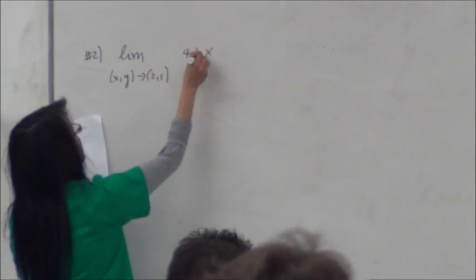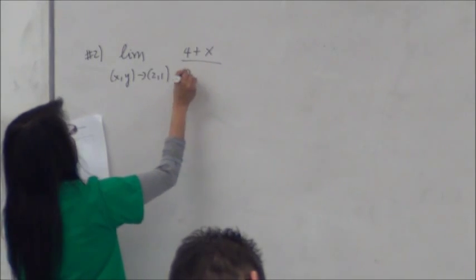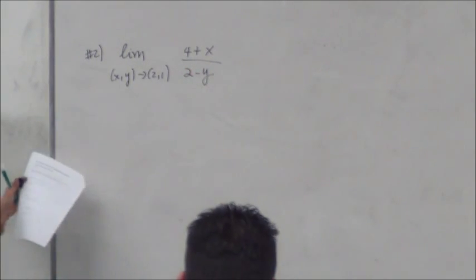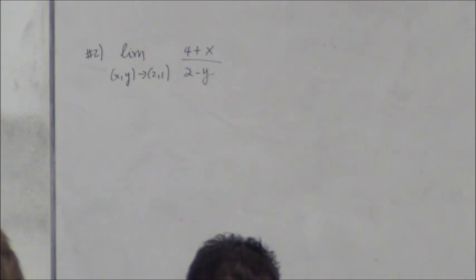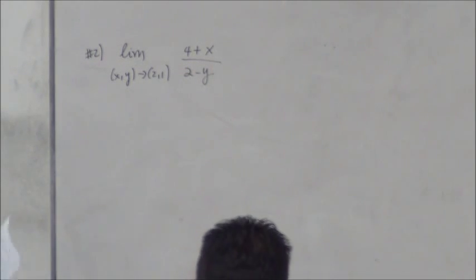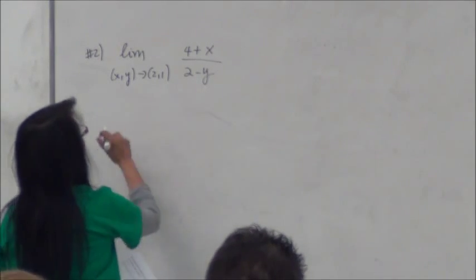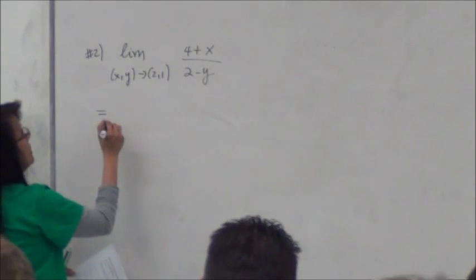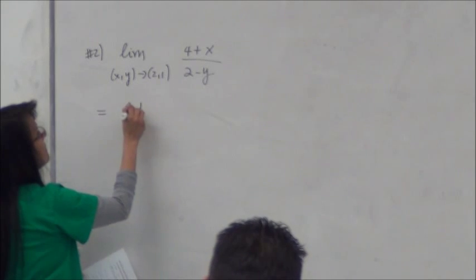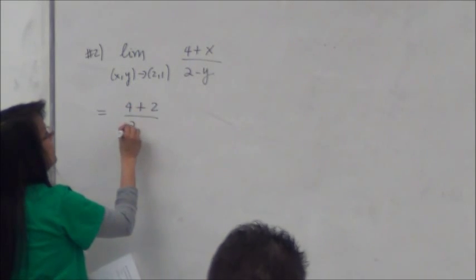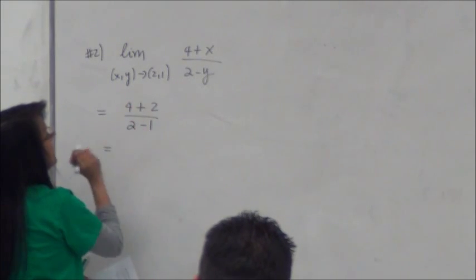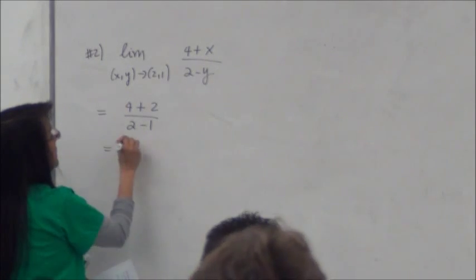What do you think is the limit of 4+x over 2 minus y as x, y approaches 2, 1? What did you do? Substitute. So it's going to be 4 plus 2 over 2 minus 1, which is 6.